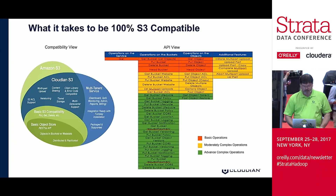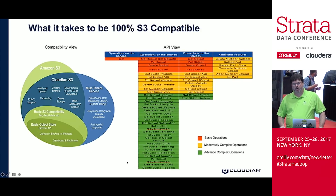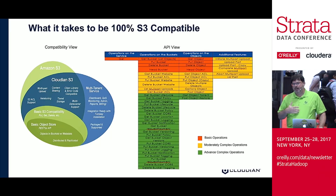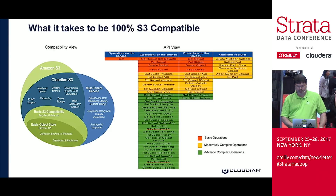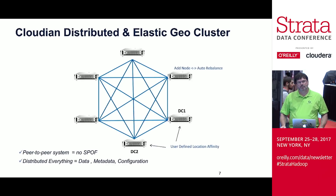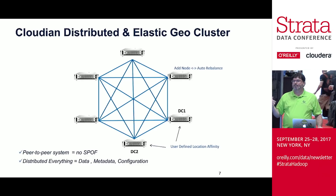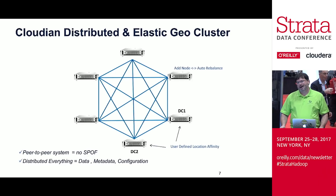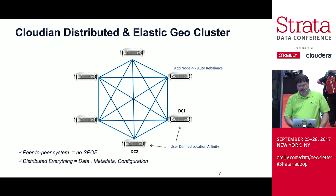On the S3 API — not every object store is truly compatible with it. They might do some gets, puts, posts, and deletes — basic things. But with Cloudian, you get all the verbs available within the API and you don't have to change your application to have it work on premise. We're a distributed cluster that is geographically aware. When a request for data comes into the system, you're never more than one hop away, so latency and response time to the application is extremely low. We're definitely extremely performant for an architecture that can scale to hundreds of petabytes and billions and billions of objects.